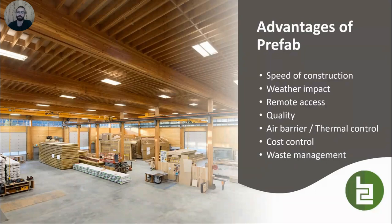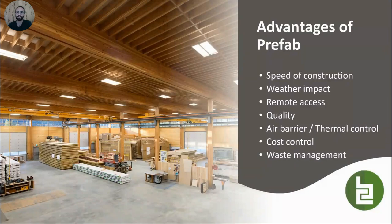Typically for us at BC Passive House, we're able to reduce material waste to between 2% and 5%, compared to between 10% and 20% on conventional site-framed jobs. You also greatly reduce the risk of wasting pieces — wasting a stud or a plate — because the CNC machine cuts everything perfectly. No mistakes. You won't accidentally cut a stud one inch too short. Everything is cut perfectly by the CNC machine.